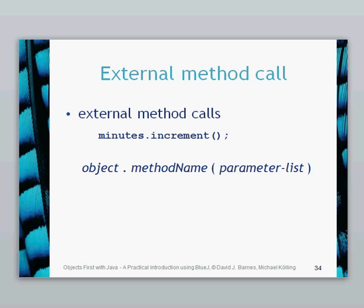For external method calls, we previously looked at object creation. We created a NumberDisplay object in our ClockDisplay. We created a NumberDisplay type called minutes. Once you've created that, you can call the methods within that minutes object. In the NumberDisplay class there is a method called increment — that's effectively the tick method. So we say minutes.increment to tick the minutes object along by one. That is called from the ClockDisplay object, so it's called from a different class and object — that becomes an external method call.